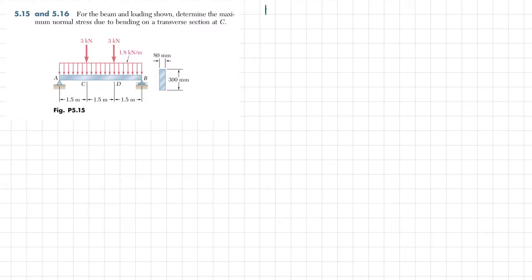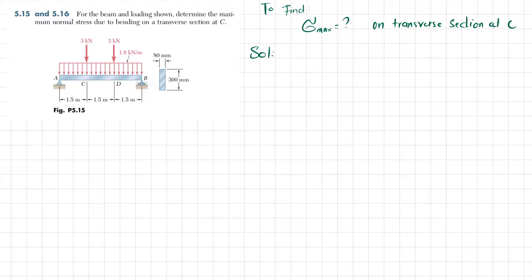We have to find the maximum normal stress on the transverse section at C. The bending stress formula is sigma = Mc/I, where M is the bending moment, c is the distance from the neutral axis to the outermost layer, and I is the moment of inertia. To solve this problem, we first need the support reaction at point A.